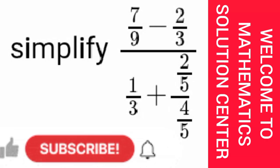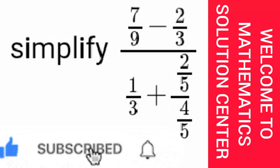Good day everyone and welcome to Mathematics Solution Center. Today we are looking at a question that says simplify 7/9 minus 2/3, all over 1/3 plus 2/5 over 4/5.